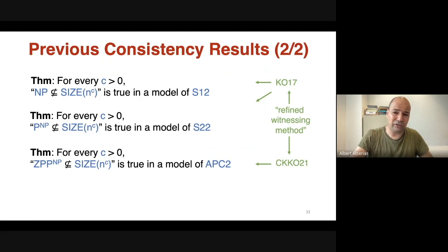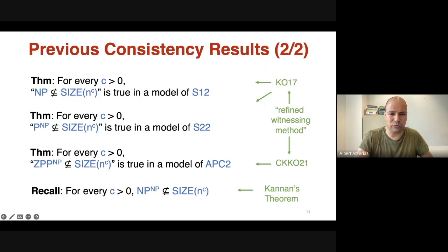Going higher in the hierarchy to S²₂, one needs higher complexity classes. In recent work from 2021, for the theory APC₂ of approximate counting — a strong theory within T₂ — one can show that PP^NP doesn't have fixed polynomial size circuits. These theorems were shown by refining the witnessing method. For us we need a new method, because if we want to go to a very strong theory well beyond NP^NP, we're not going to get meaningful results using those prior techniques.